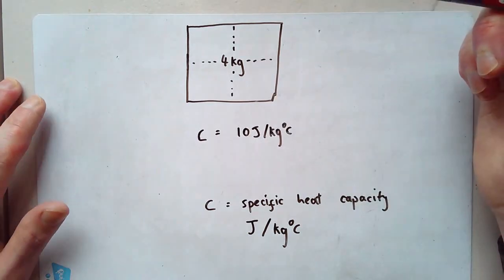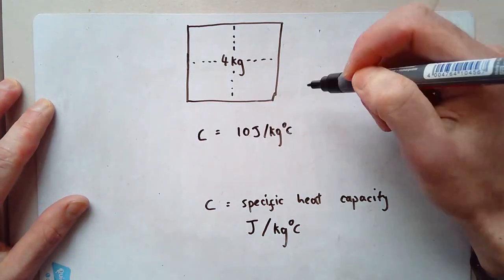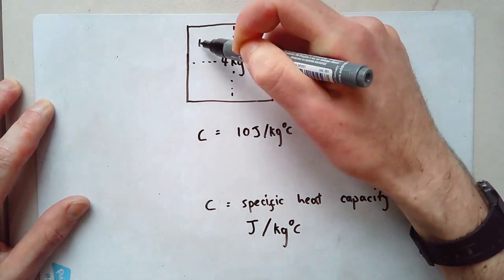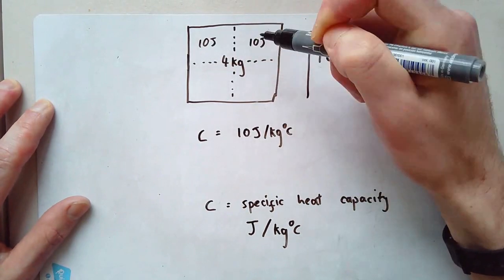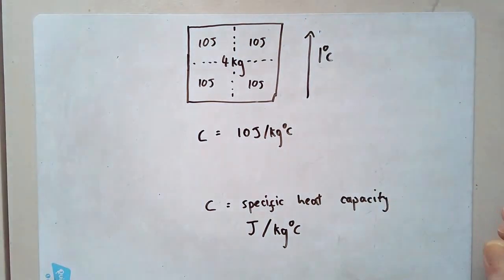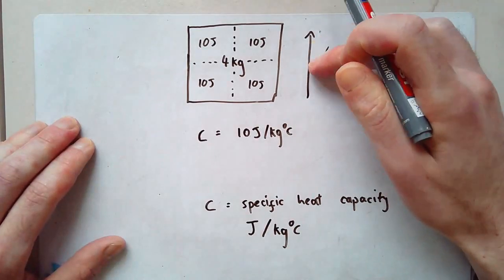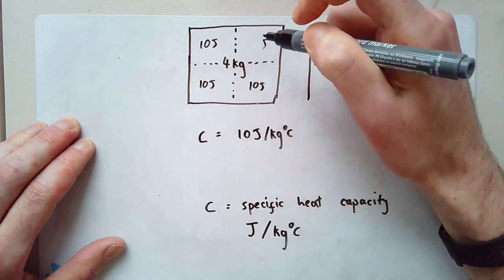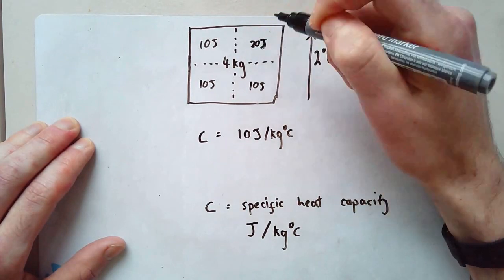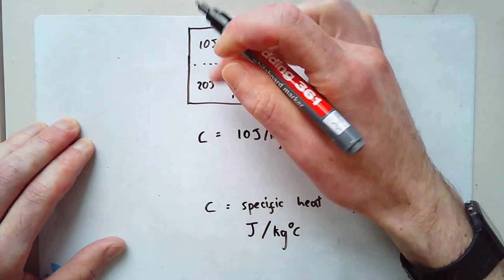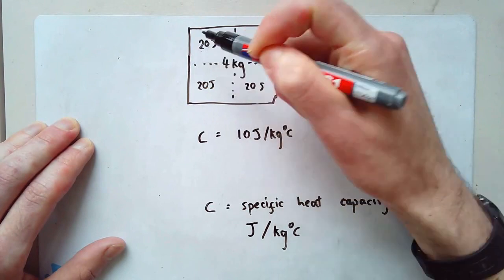So if I want to increase the overall temperature by one degree C, I need to put 10 joules there, 10 joules there, 10 joules there, and 10 joules there. If I want to increase it by two degrees C, 20 joules here, 20 joules here, 20 joules here, and 20 joules there. If I wanted to increase it by just two degrees.